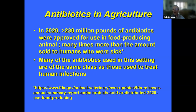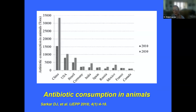Antibiotics in agriculture is also an issue. In 2020, there were more than 230 million pounds of antibiotics approved for use in food-producing animals — many times more than the amount sold to humans who were sick. Many of the antibiotics used in agriculture are the same class as those used to treat human infections. A modeling study showed antibiotic consumption in animals in 2010 and predicted use in 2030. China has the most antibiotic use in agriculture in the world, and the U.S. is second.